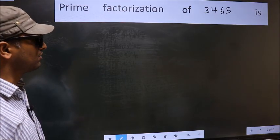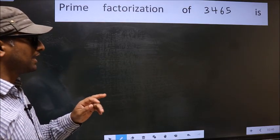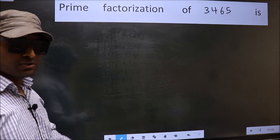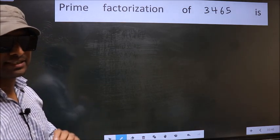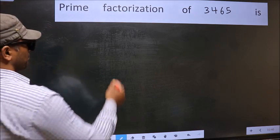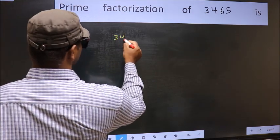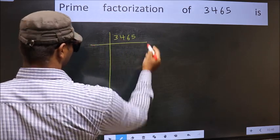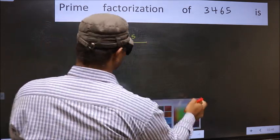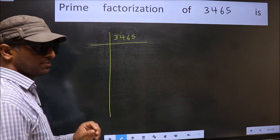Prime factorization of 3465. To do prime factorization, first we should frame it in this way. 3465. This is your step 1.